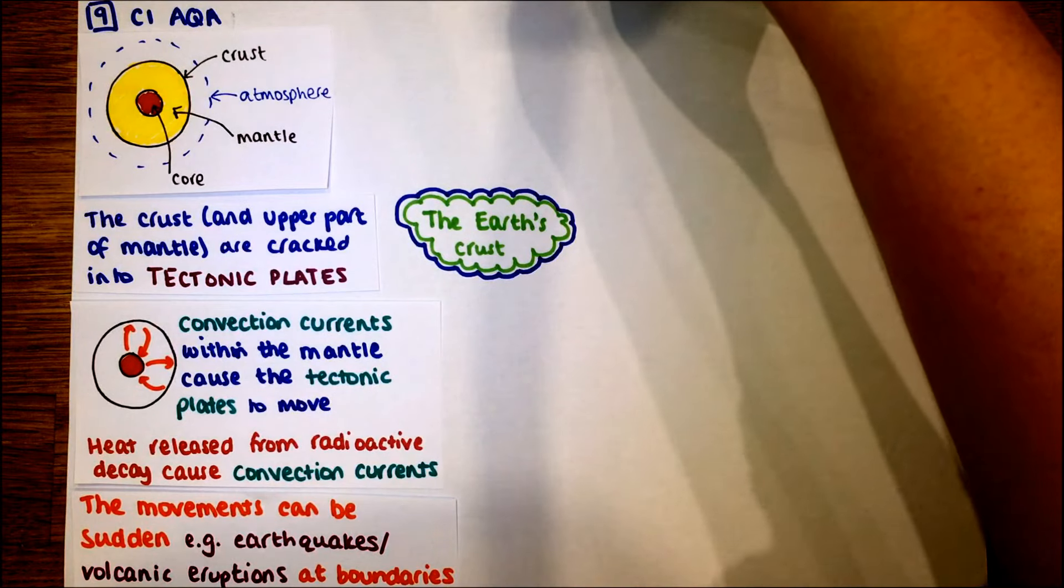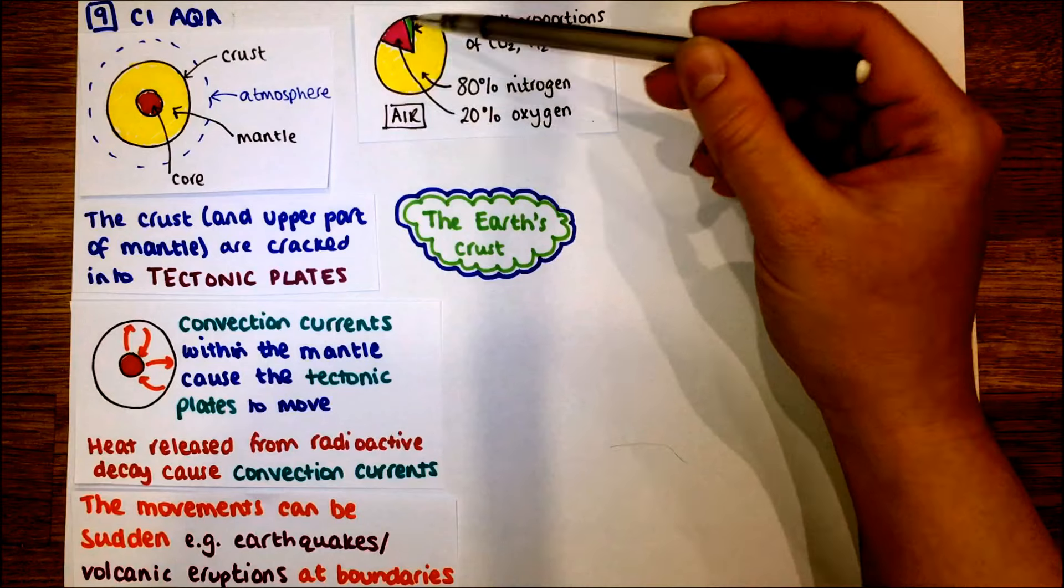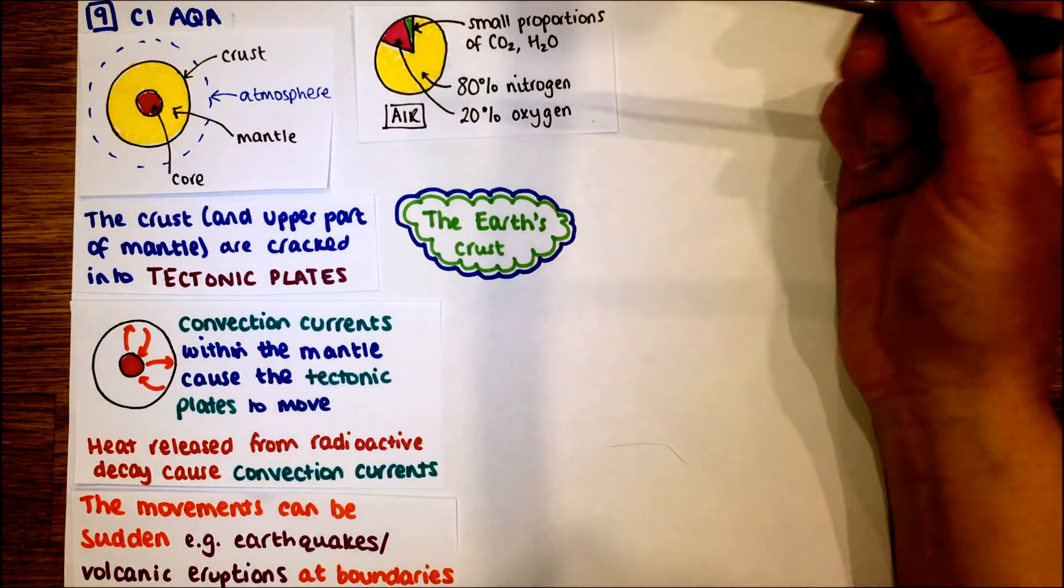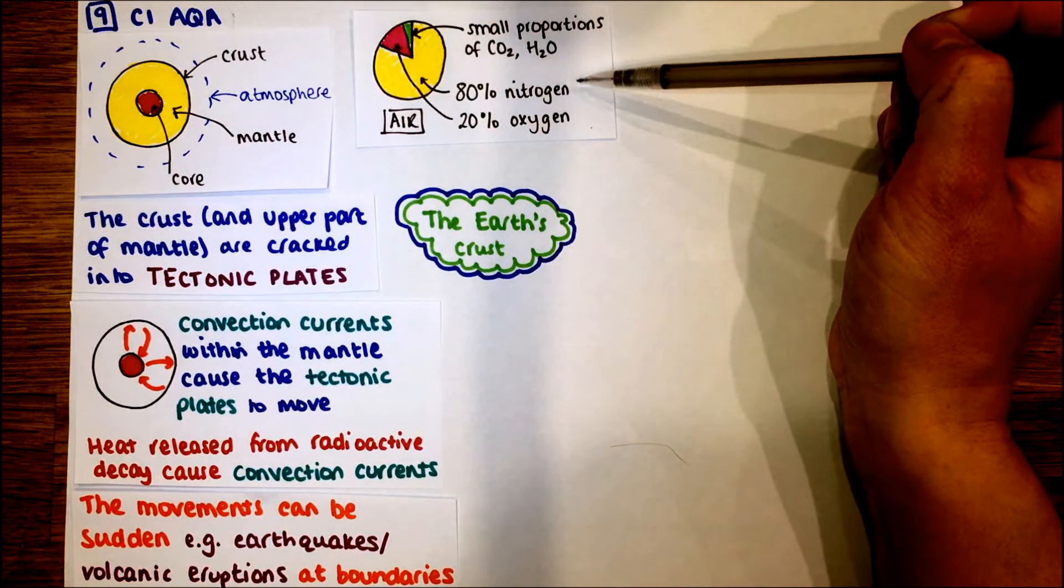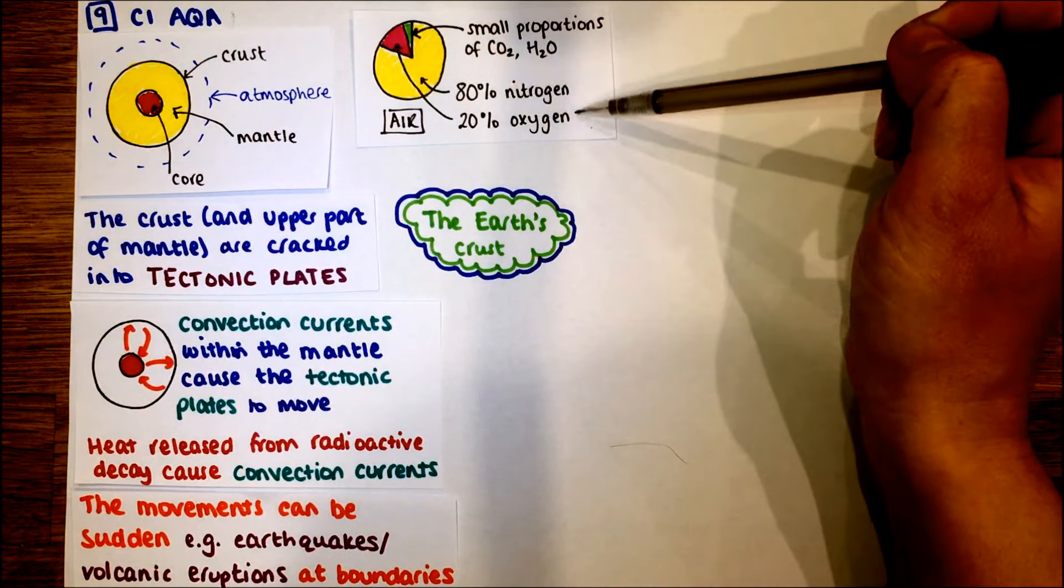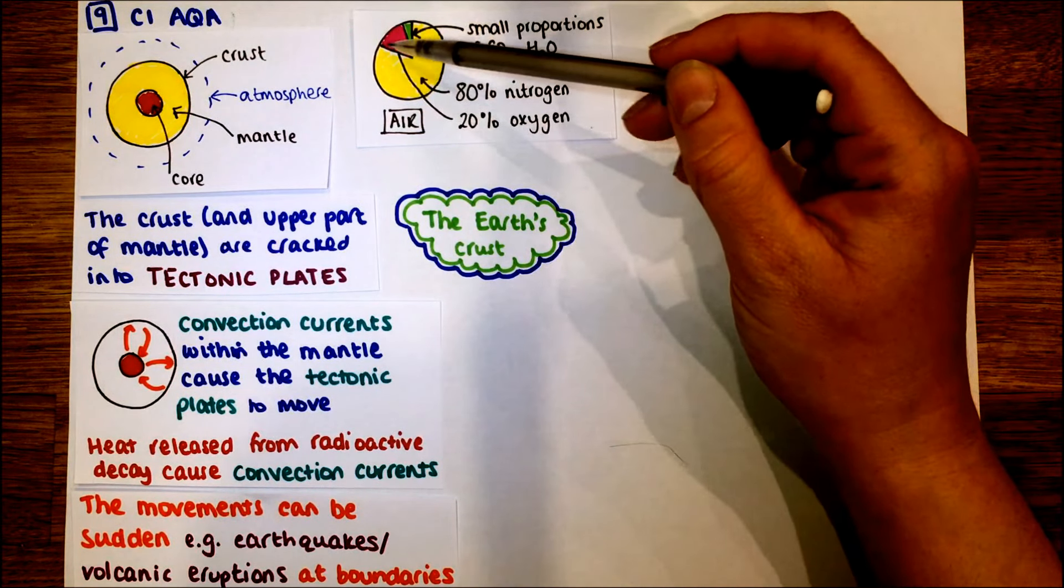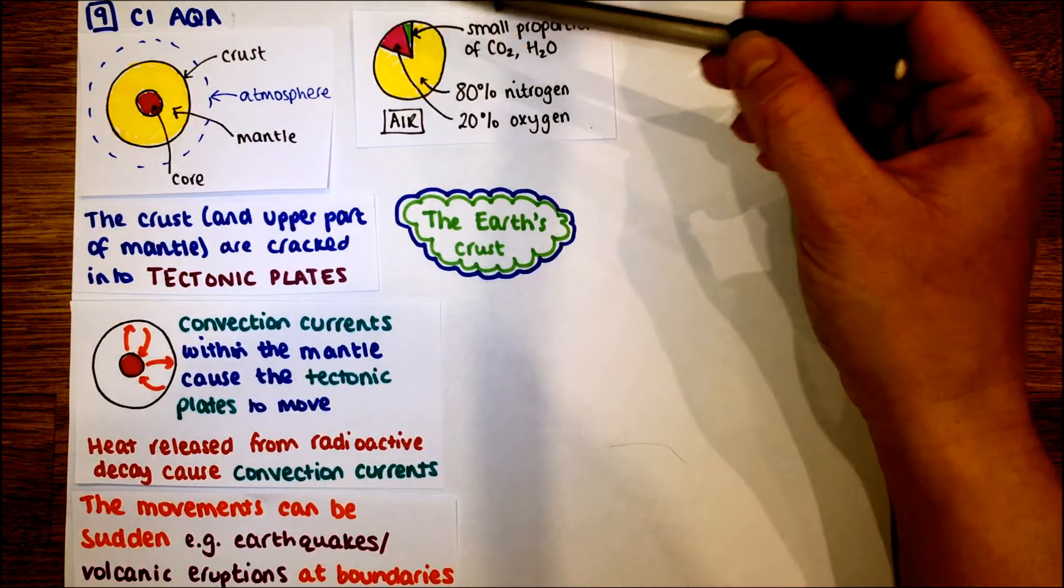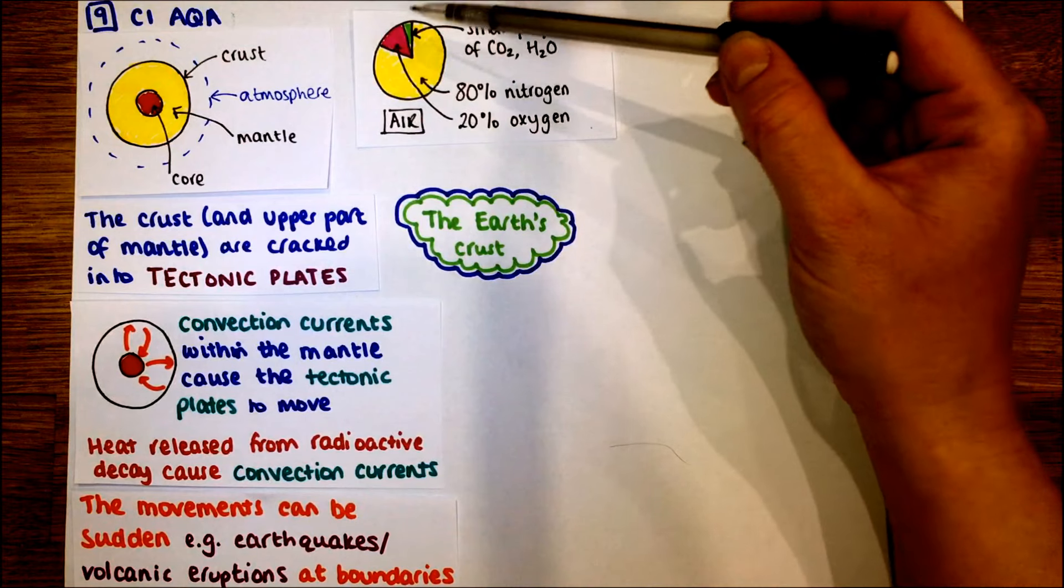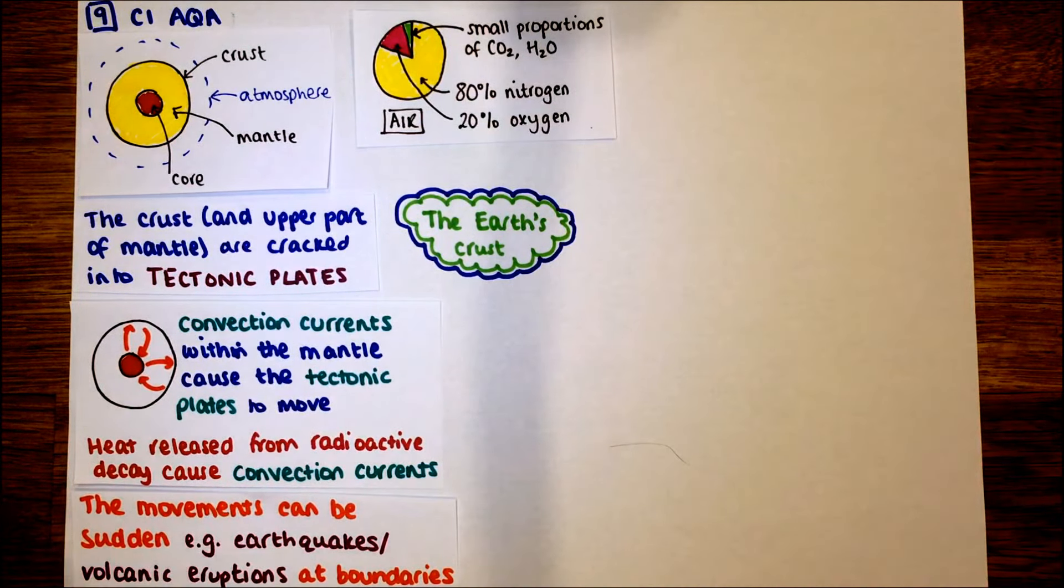You need to know about the gases within the earth. Sometimes you see a pie chart like this, you have to label the different areas. About 80% of our air is actually nitrogen. Then people tend to get confused with nitrogen and oxygen. So 80%, the majority is nitrogen. About 20% is oxygen. Then you have a very, very small percentage, so 0.01, very small amounts of carbon dioxide and water, and some of them may be noble gases, but very small amounts.